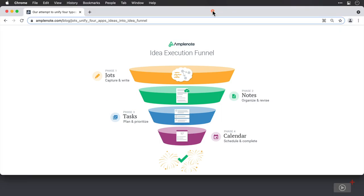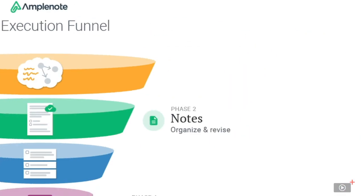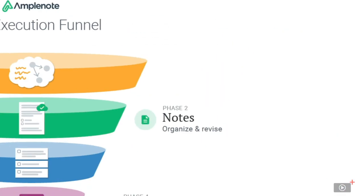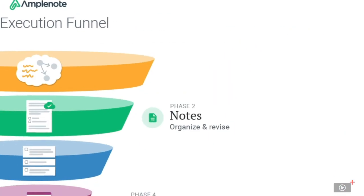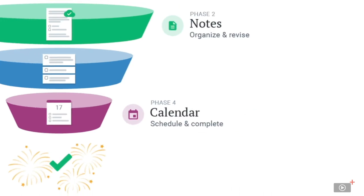Let me explain. This is Amplenote's idea execution funnel — a methodology that plots the life cycle of an idea that you have. You have the idea or ideas and capture them somewhere, then you organize them or pad the ideas out. Then, as you work your way through the funnel, you plan how you're going to execute the idea, define its importance, before finally scheduling it to be done.